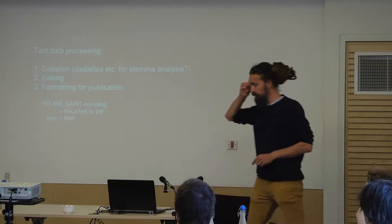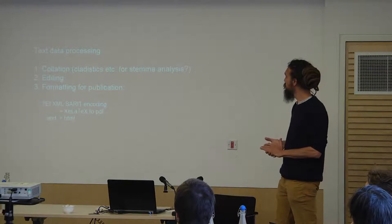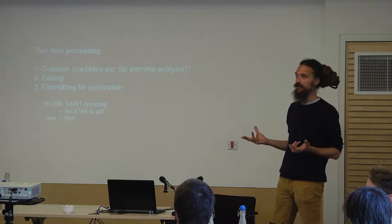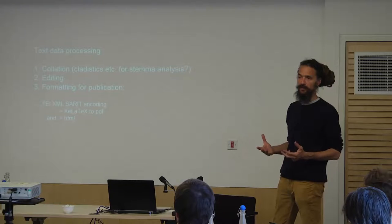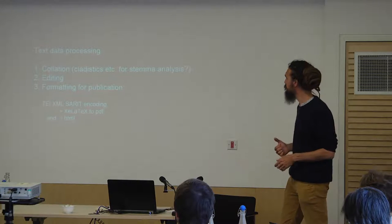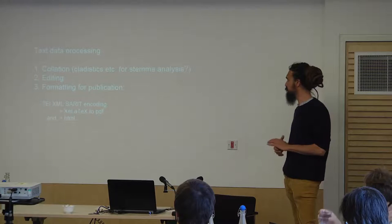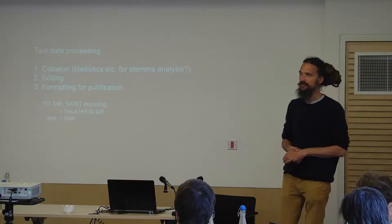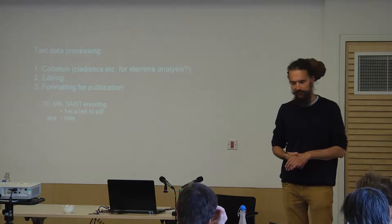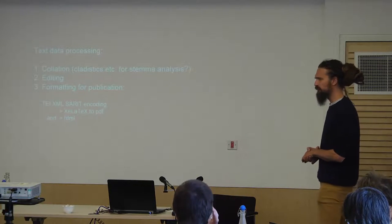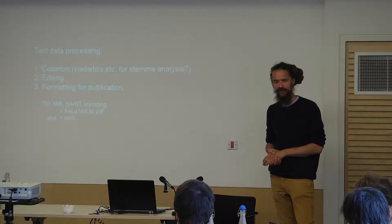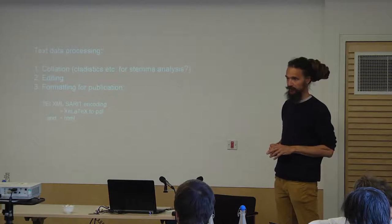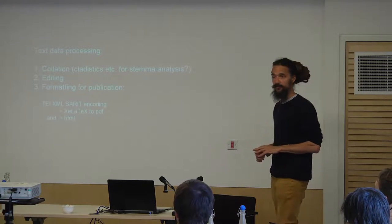Looking at the philological side of the project — the text data processing — the process is we get all the witnesses we can of a text and collate those manuscripts. In the project proposal I put some fancy stuff in about cladistics. Does anyone know about cladistical stemmer analysis? But since I've looked into it since the proposal, I've become more and more sceptical about cladistical analysis and I don't think we're going to use it at all. There are various problems with it.